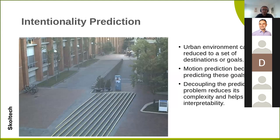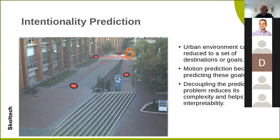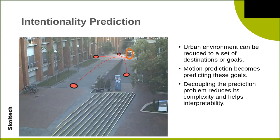Let me first talk about intentionality prediction, or intent prediction. We have a pedestrian and the general task is motion prediction — we would like to know what future trajectory this person is going to take. What intentionality gives us is we can break down the problem. The urban setting is translated as just a set of destinations or goals — entrances, crossings, doors — basically salient points. Motion prediction then becomes just predicting these goals, which is half of the prediction problem.